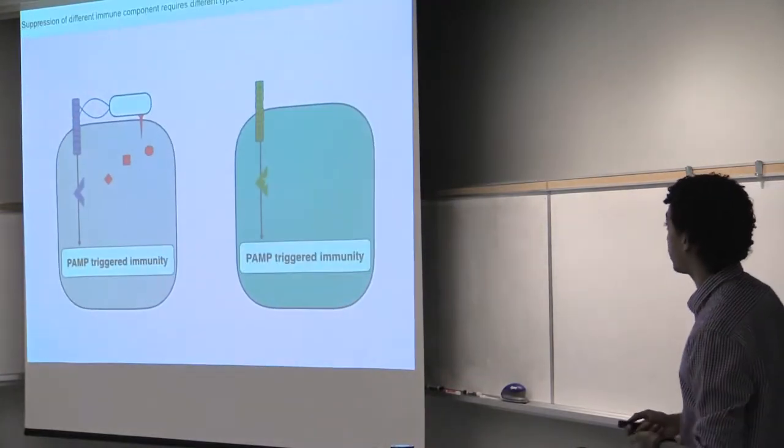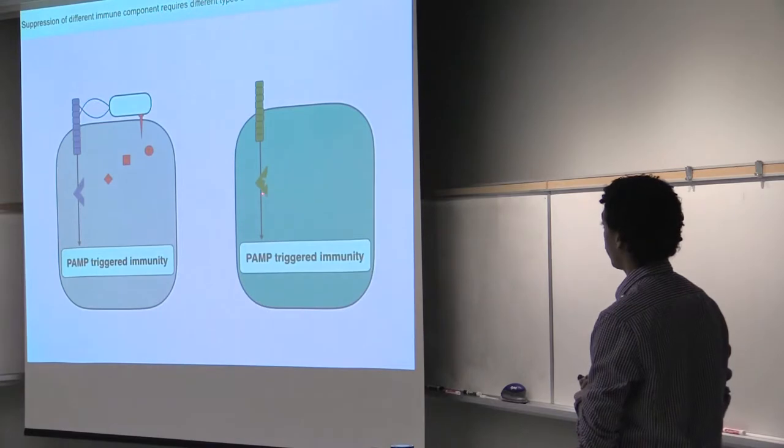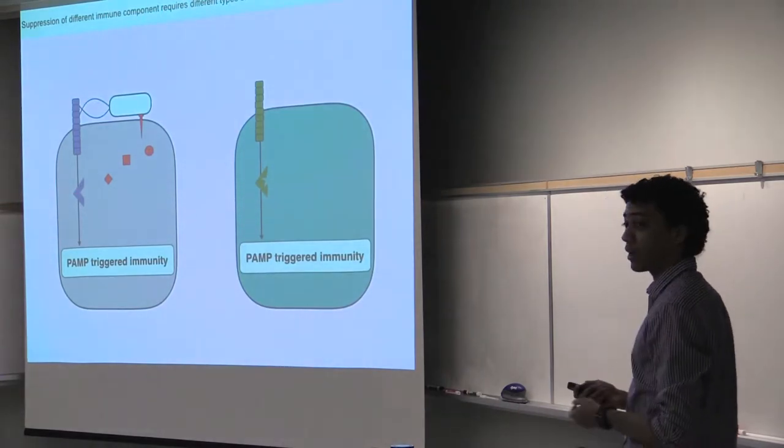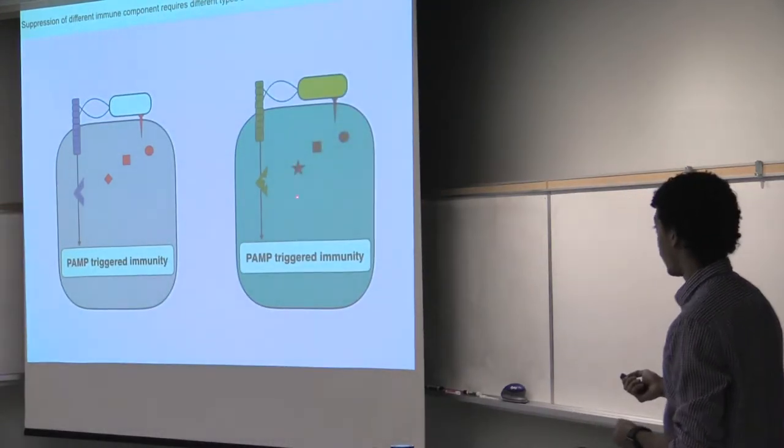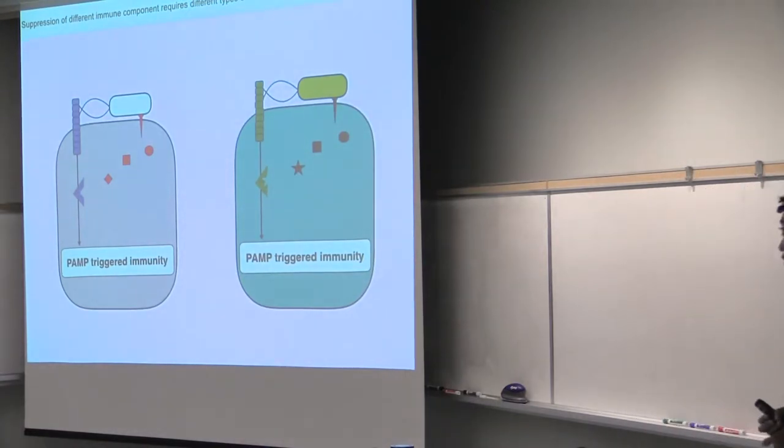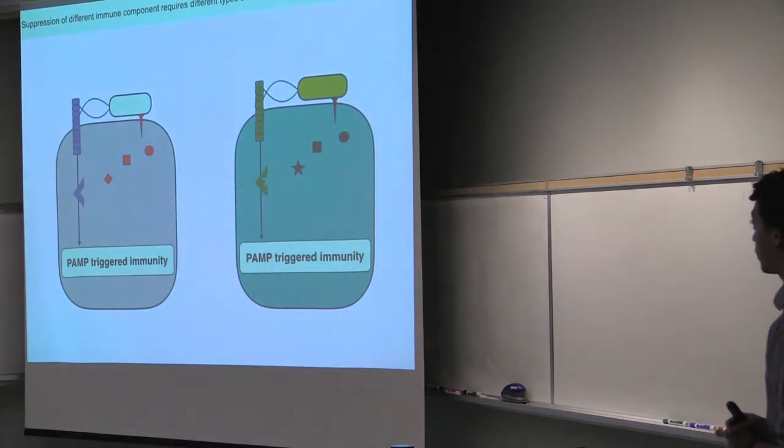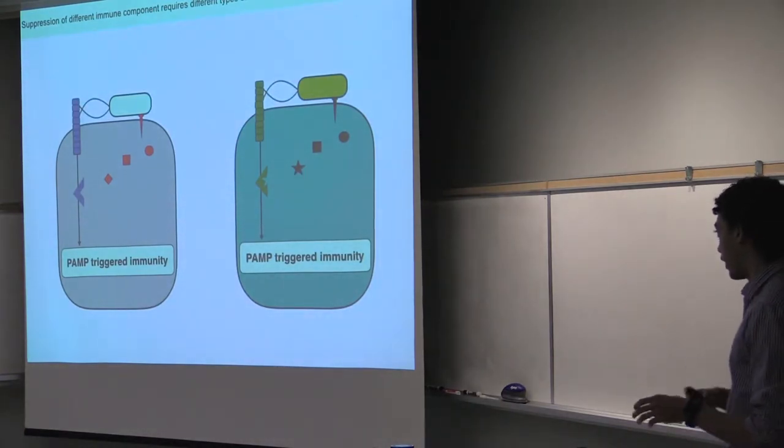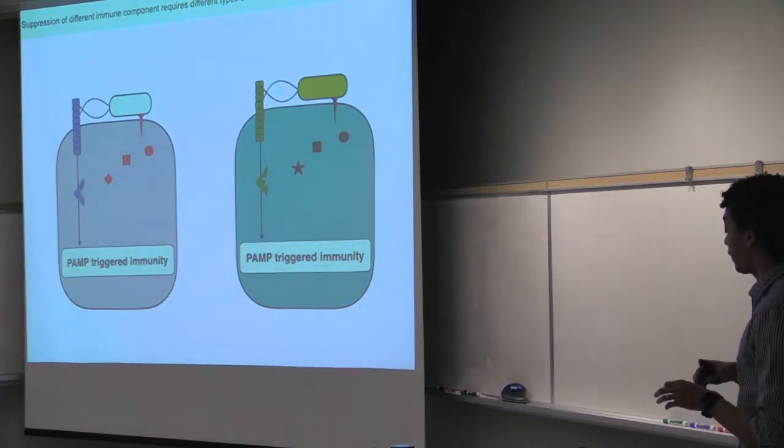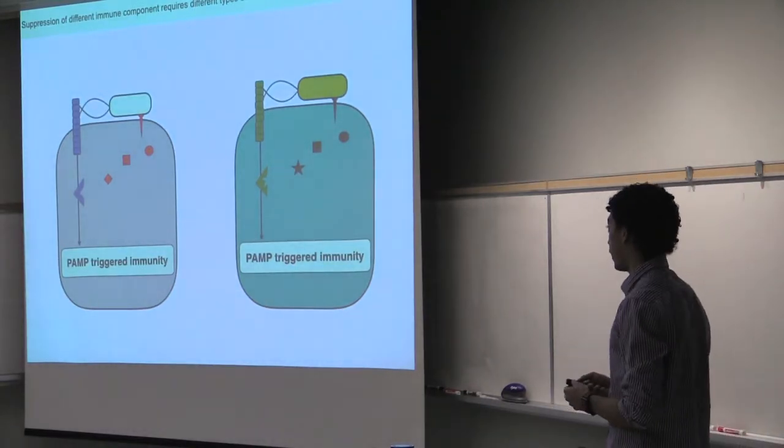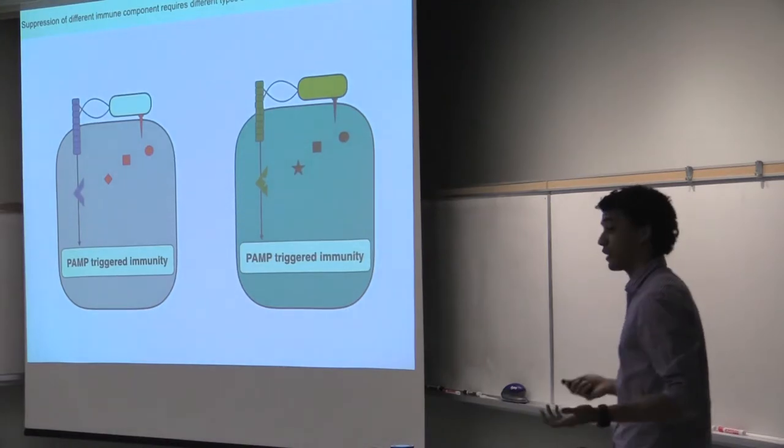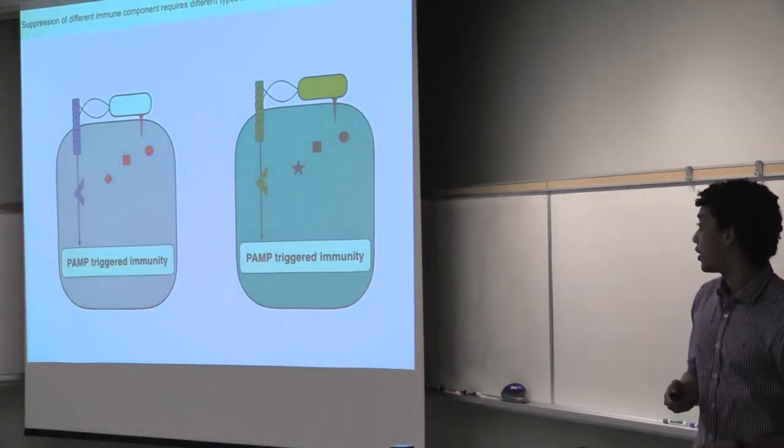So you can imagine that different types of plants have different types of immune components, and these different types of immune components require different effectors to be suppressed. So this model then suggests that Pseudomonas syringae is either a very generalist pathogen, where single isolates can infect a number of different hosts at the same time, or that Pseudomonas syringae isolates are actually very specific, where single isolates can infect specific kinds of hosts. And when we compare these isolates, we should see a high level of variation at the genome level.